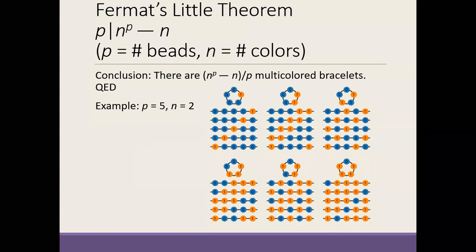Remember, n to the p was the total number of string beads. We subtracted n because we got rid of the ones that were just a single color — if n was 3, maybe red, green, and blue — those single-color strings wouldn't form a group, they'd just be on their own. So we removed those, and all the rest fell into nice groups of size p, telling us p divides. We also handled the case where p was even, reducing to p equals 2, and where n was negative or zero, reducing to n positive and p an odd prime.